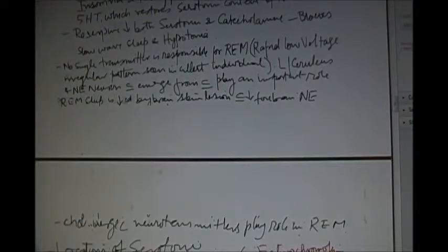Locus coeruleus and norepinephrine. Catecholamines play an important role in sleep and REM sleep is decreased by brainstem lesions that decrease the forebrain norepinephrine. The cholinergic neurotransmitters play a role in REM sleep.